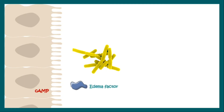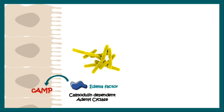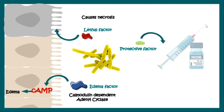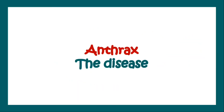Bacillus anthracis produces an edema factor, which is a calmodulin-dependent adenyl cyclase that increases the level of cAMP (cyclic AMP) within the cell, leading to edema. It also produces a lethal factor, which causes cellular necrosis. The protective factor is called so because it is used in the production of a vaccine against anthrax.